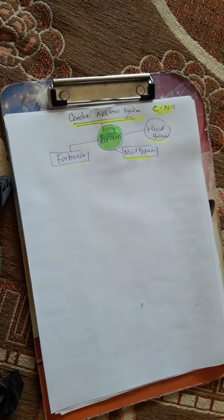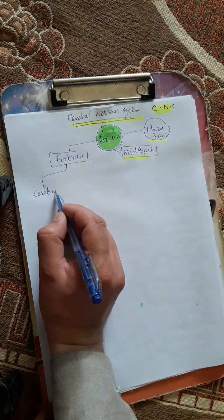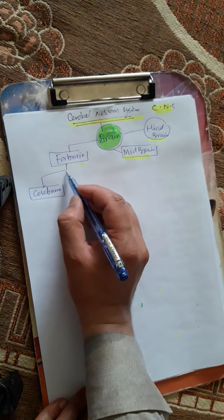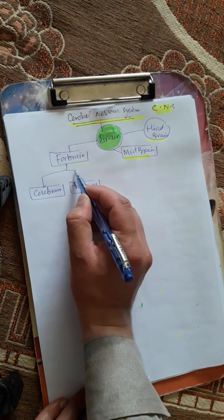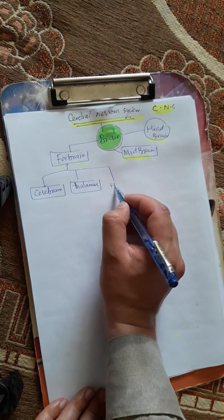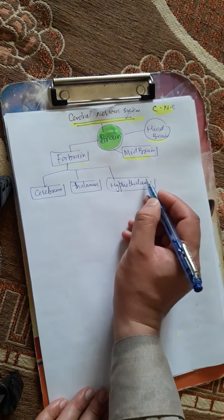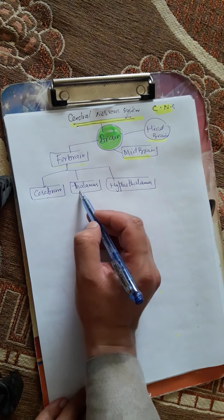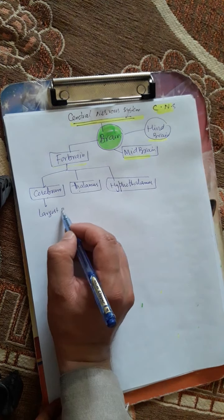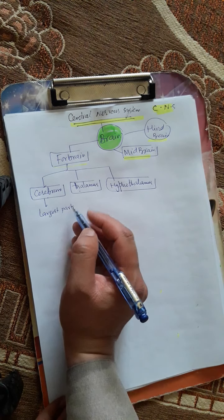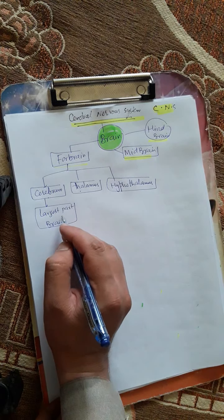We will also see the diagram of the brain. In the forebrain, we have different parts. The first one is the cerebrum. The second one is the thalamus. And the third part is the hypothalamus. Cerebrum is the largest and most important part of the brain.